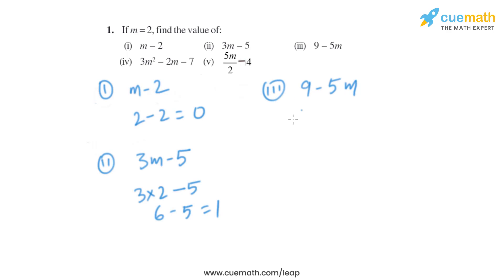Now let's move on to the third part. The expression that is given is 9 minus 5m. Now if we put the value of m equals to 2, it will be 9 minus 5 into 2, which is same as 9 minus 10.